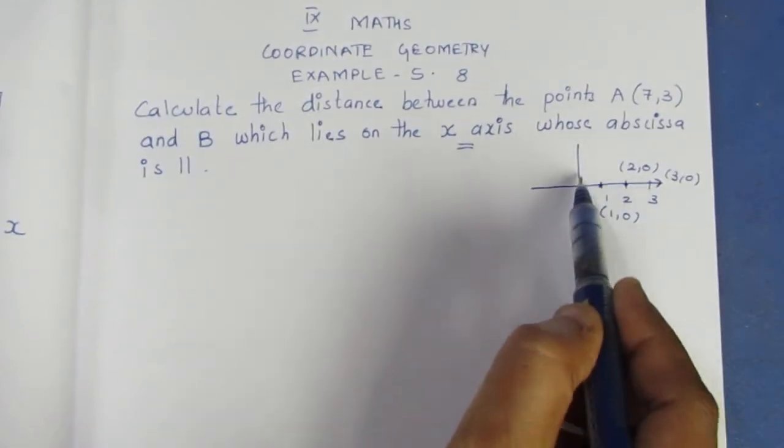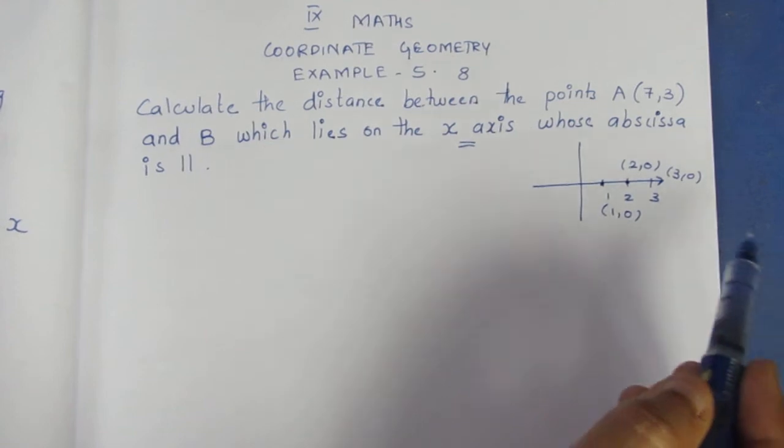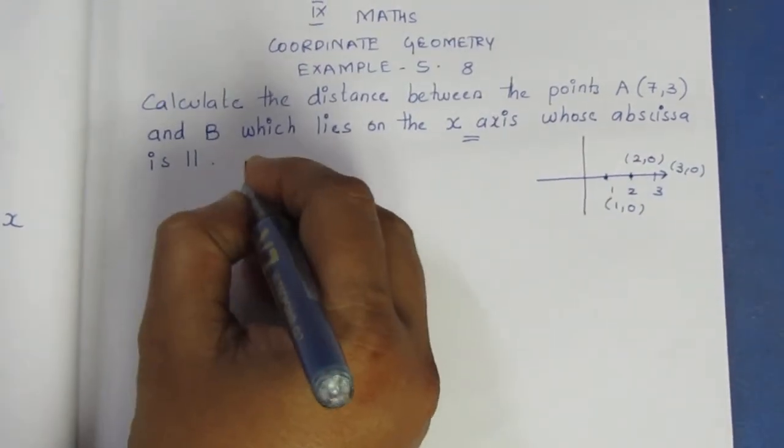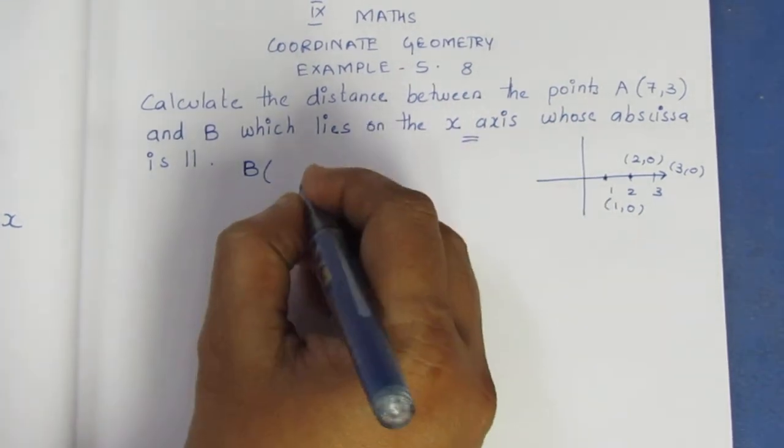So, the y-coordinate value is 0. This is the x-axis. If you look at the x-axis, y is 0.